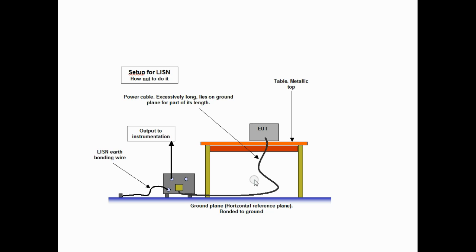This is an example of how not to do it. We do not need a ground plane on the tabletop. The table should not be metallic in any way. The cable should not be excessively long and the LISN needs to be bolted to the ground plane. If we do the bonding via a bonding wire, at the frequencies of interest this wire will present high impedance and therefore is quite unsatisfactory.